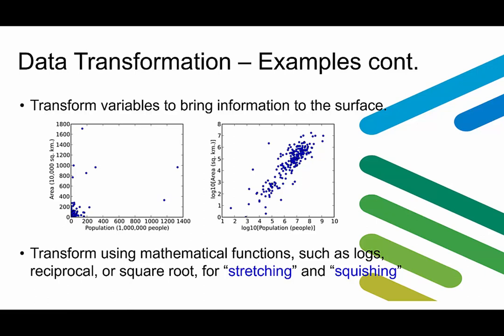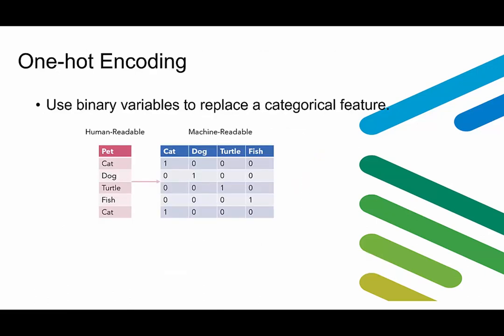We can also transform data to bring information to the surface using mathematical functions such as logs, reciprocals, or square roots for stretching or squishing data. Here's an example of using logarithm to zoom in on patterns — before the transformation, all points are clustered in the corner, but after applying the logarithm, the pattern becomes much clearer. One-hot encoding is a very common data transformation where binary variables are used to replace categorical features. Many machine learning algorithms cannot operate on labeled data directly and require all input and output variables to be numeric. For example, four categories are transformed into four new binary attributes: cat, dog, turtle, and fish.